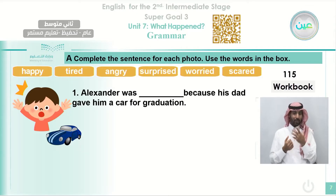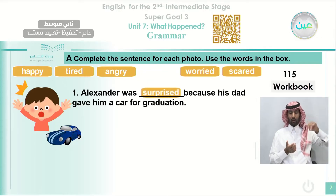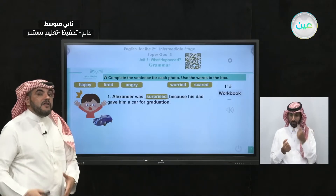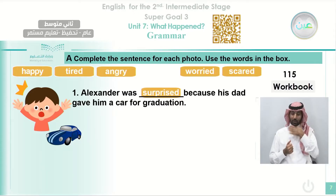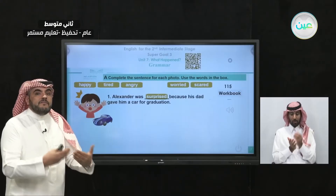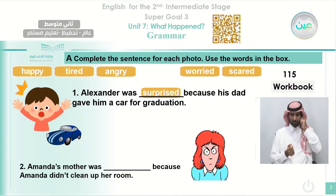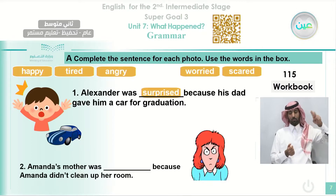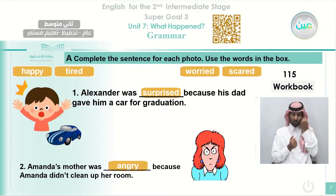Why is he happy? Let's read the question and find out. Alexander was surprised — something made him extremely happy. He became surprised because his dad gave him a car for graduation. He graduated from school and his dad gave him a present that was a car. Amanda's mother was angry because Amanda didn't clean her room. Her daughter didn't clean her room, so she is angry at her daughter.